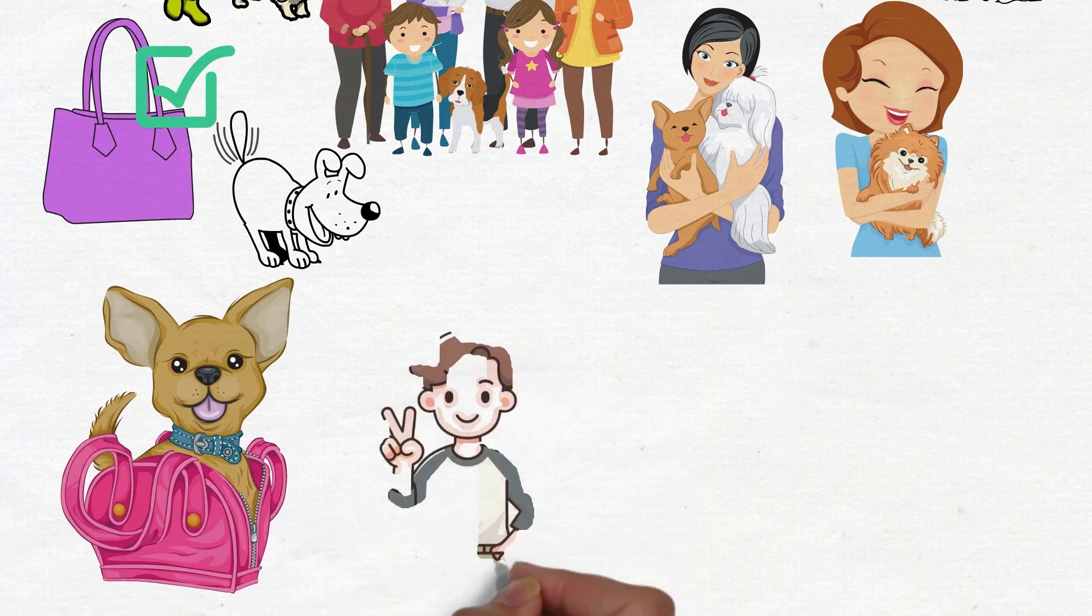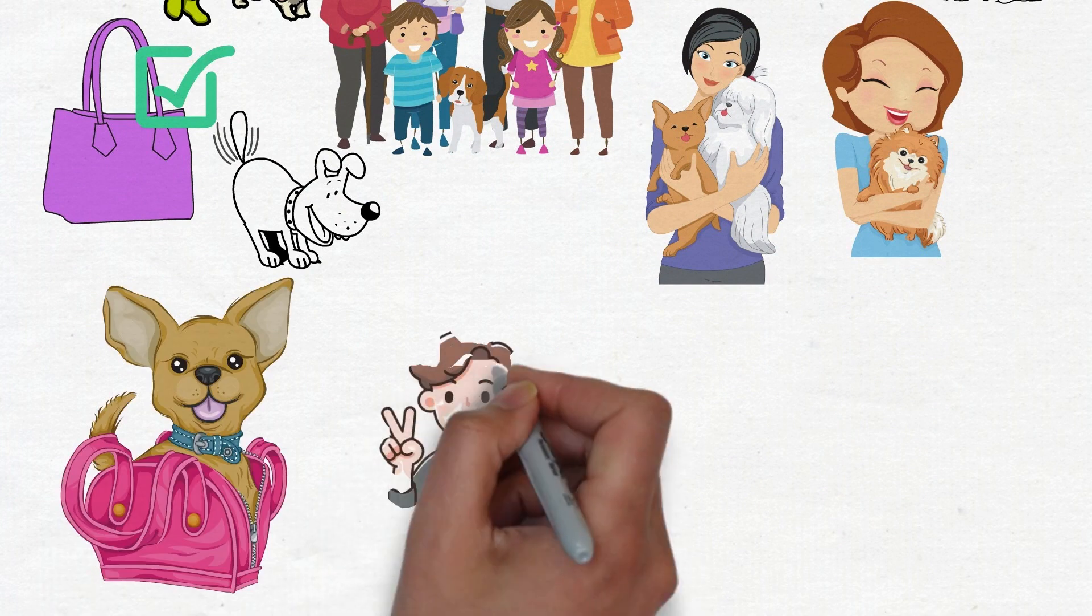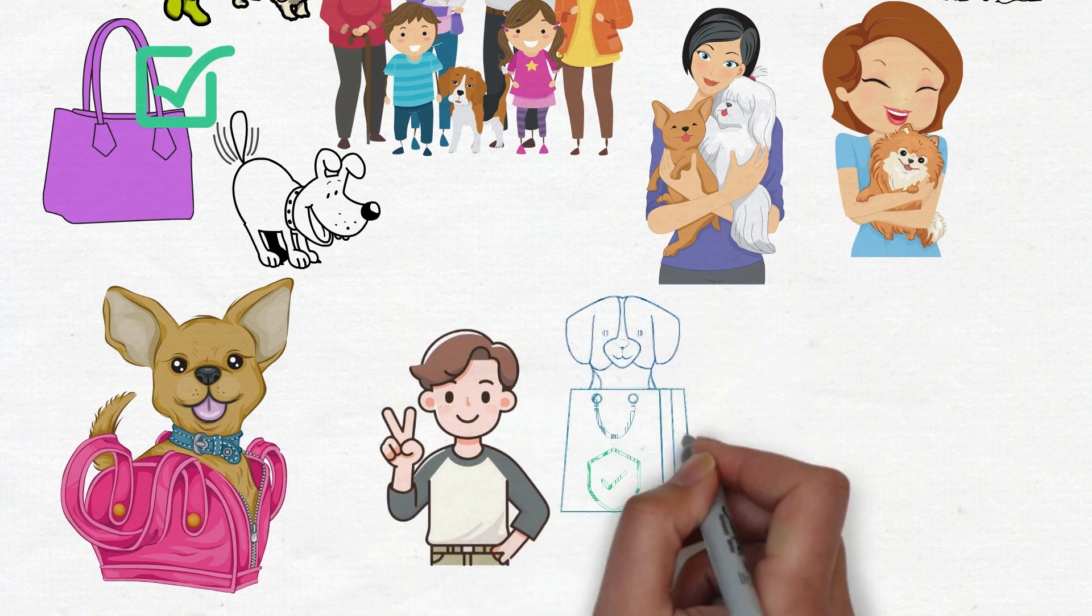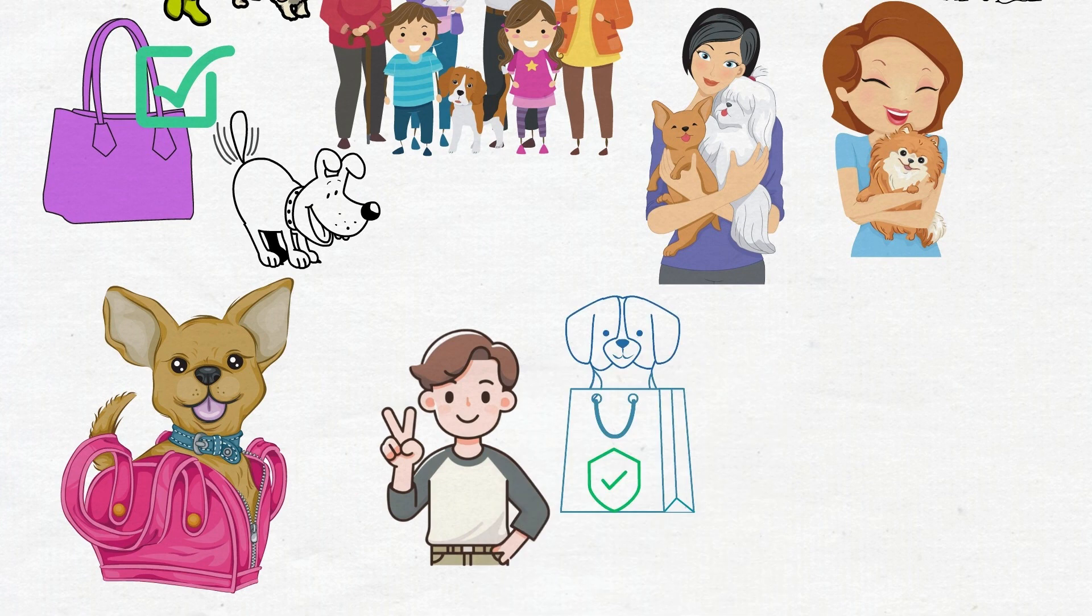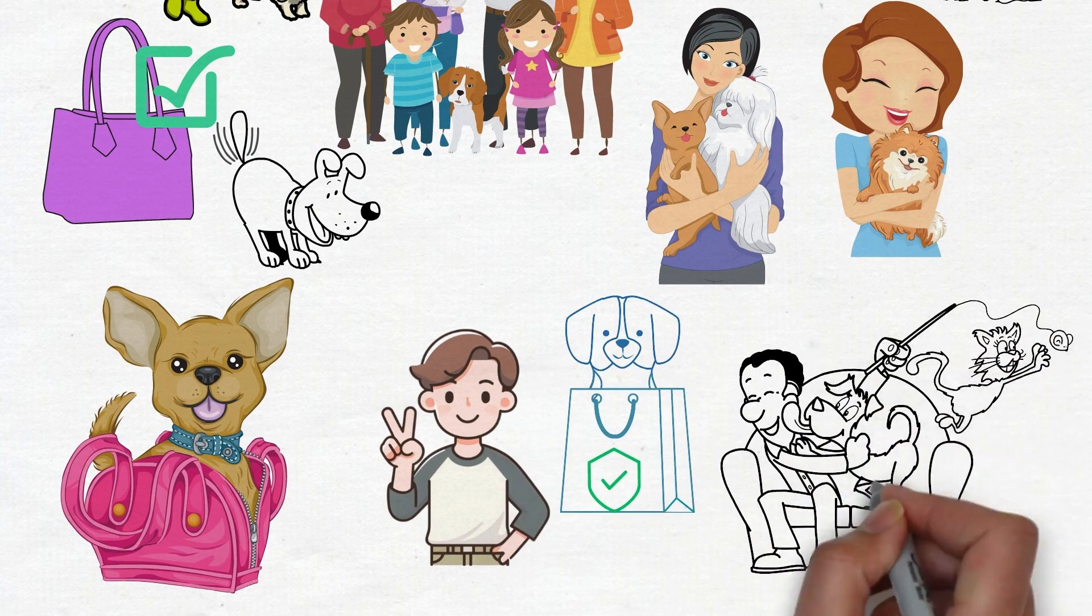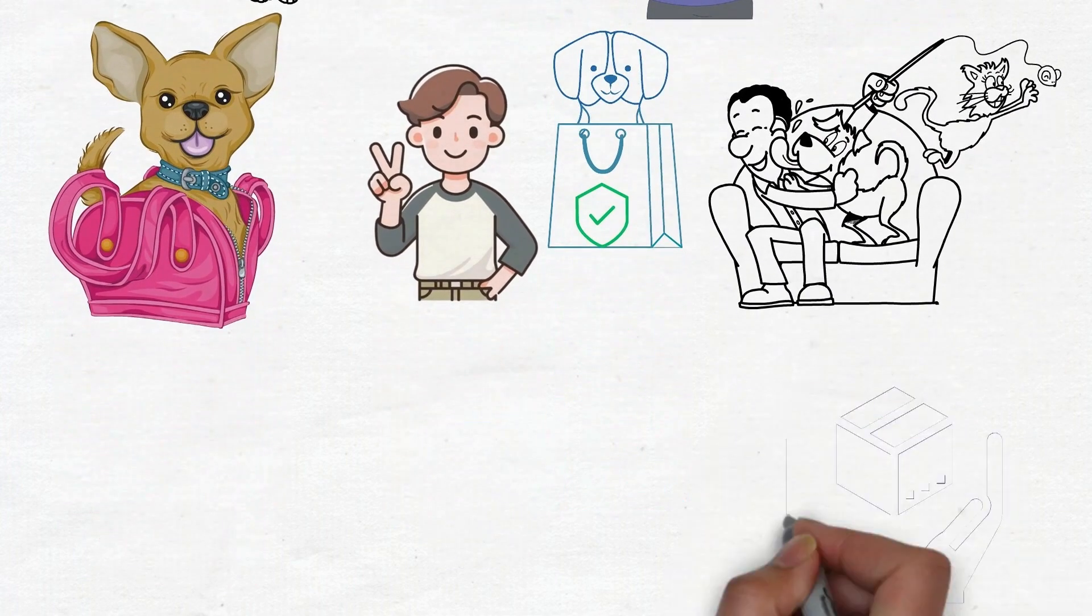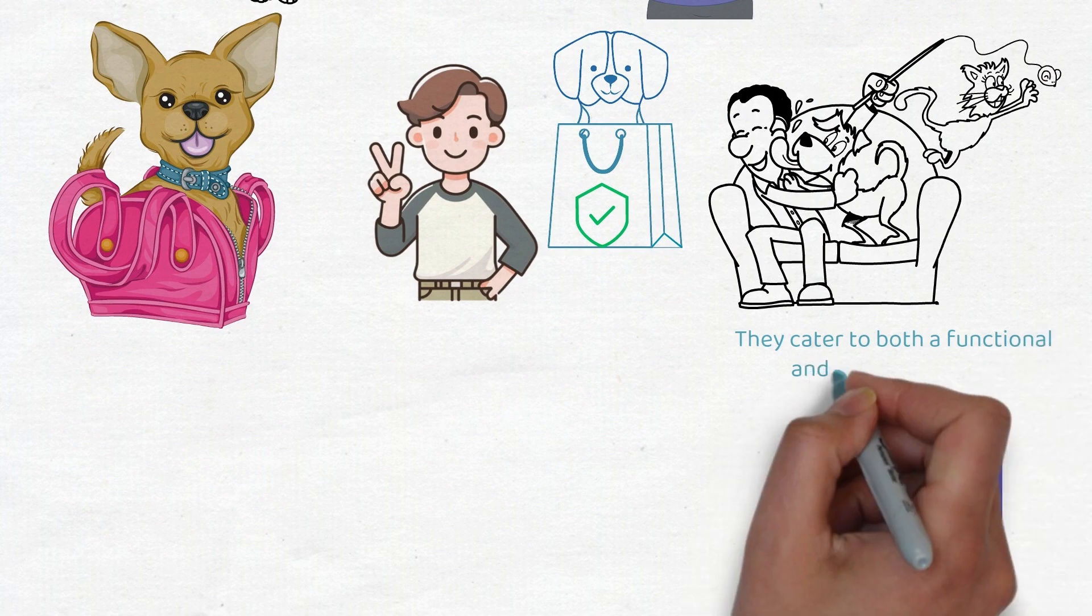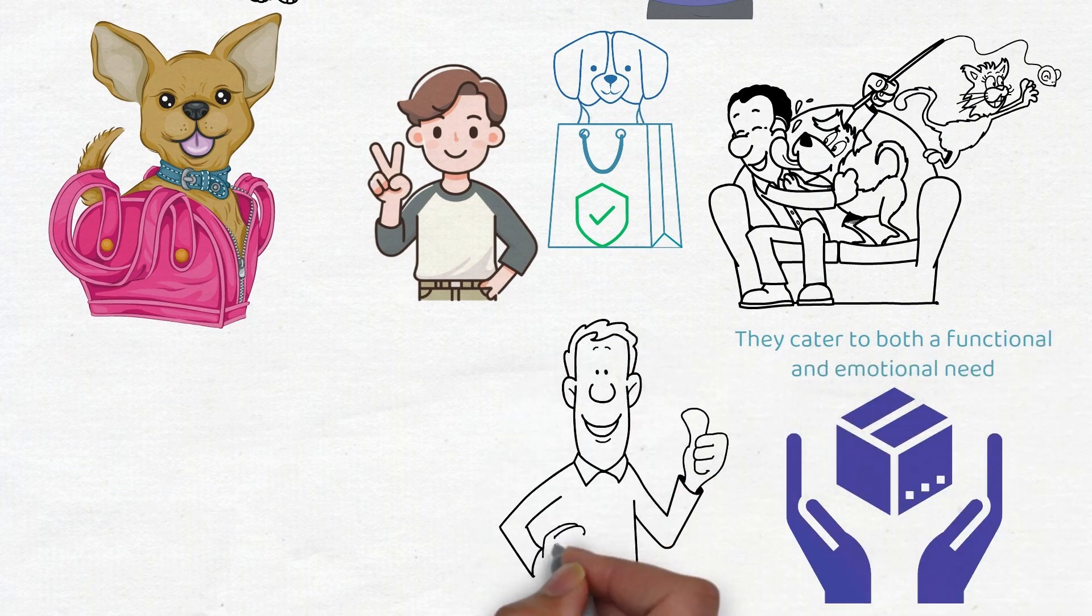Moreover, pet accessories like this handbag have a dual appeal. On one hand, they address a concrete need, namely to transport one's dog safely. On the other, they touch the emotion, the deep attachment pet owners feel towards their pets. This is where the power of passion products lies. They cater to both a functional and emotional need, making their appeal all the stronger.